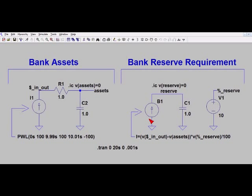I'm in the LT SPICE simulator and I want to model bank assets and the banking reserve requirement for these assets. The three components here at the left model bank assets and the three components at the right we're going to model the banking reserve requirement. This particular example is important because it introduces a new simulating component, the B1 component, which is an equation controlled current source.